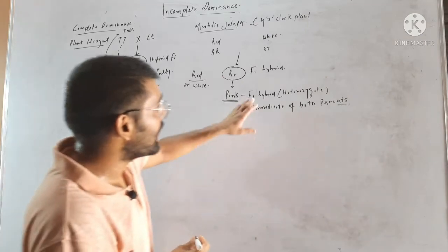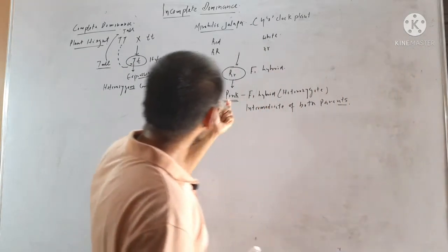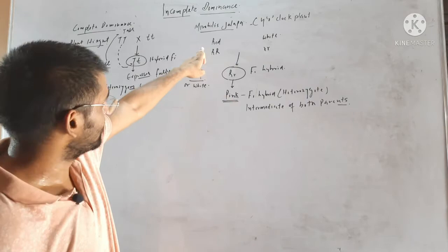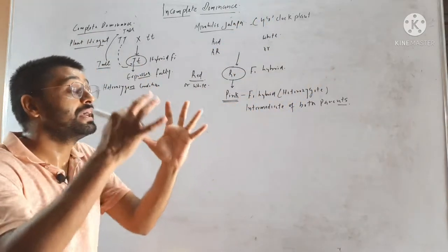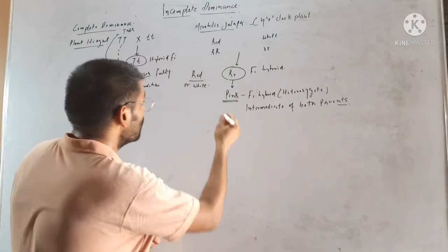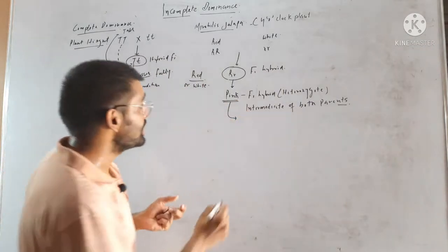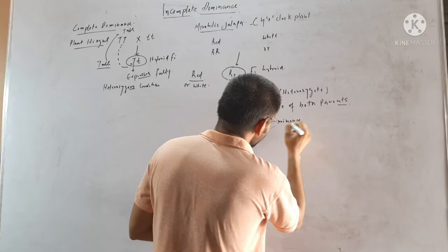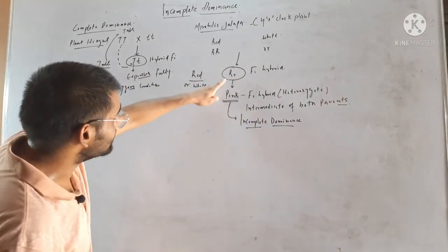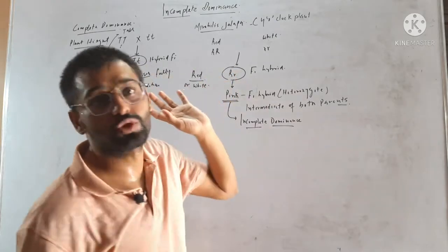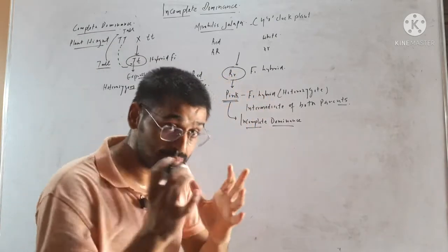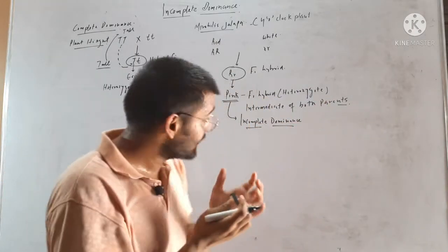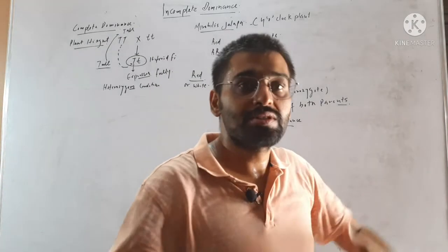When the F1 hybrid or heterozygous individual is intermediate of both the homozygous parents, it is called incomplete dominance. Here dominance is not complete. Neither allele is showing full dominance — if capital R were dominant it would be red, if small r were dominant it would be white, but it is intermediate of the two, meaning neither allele is expressing fully.